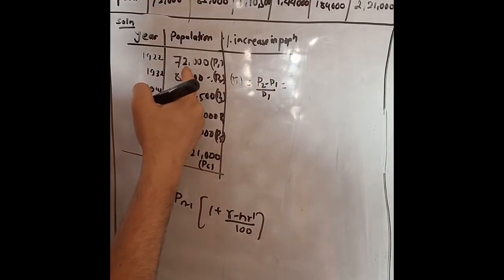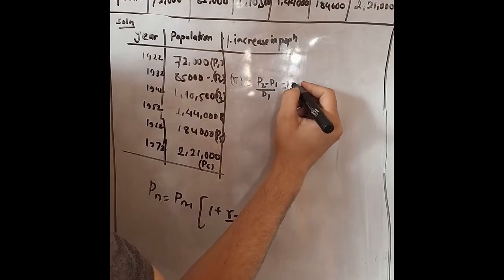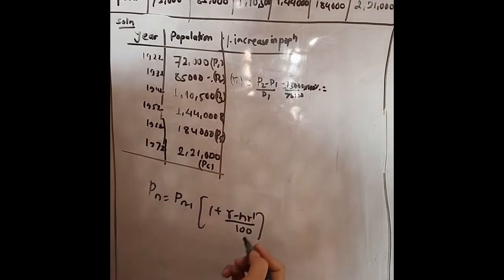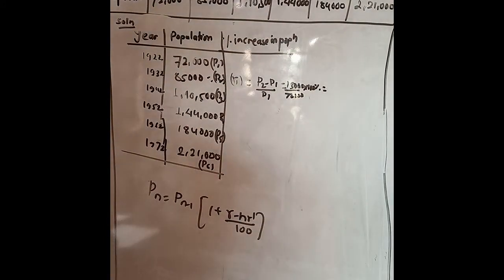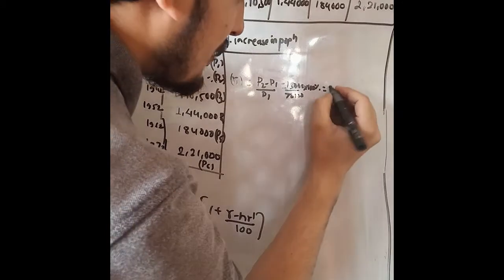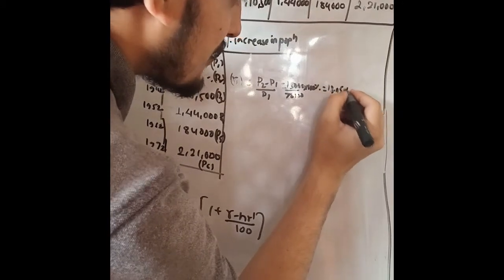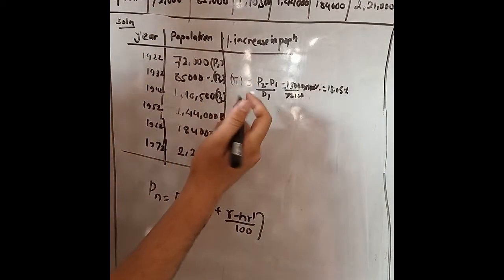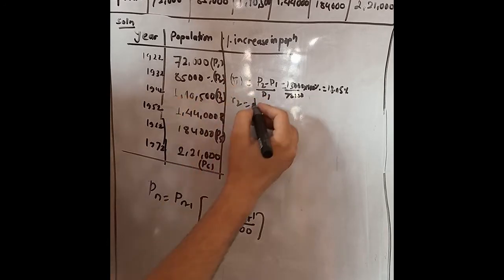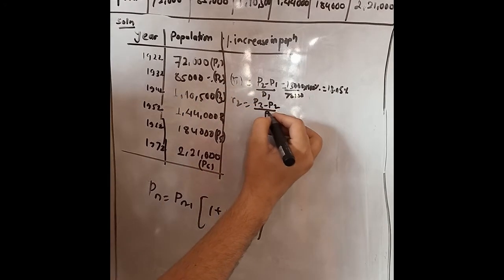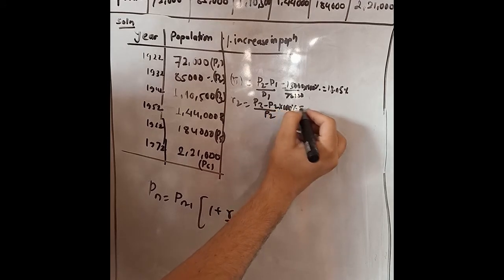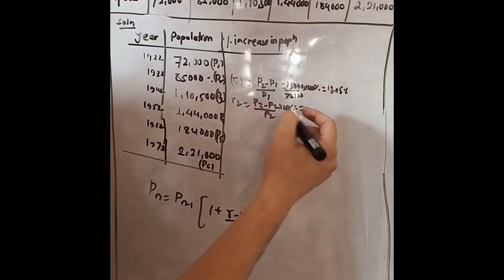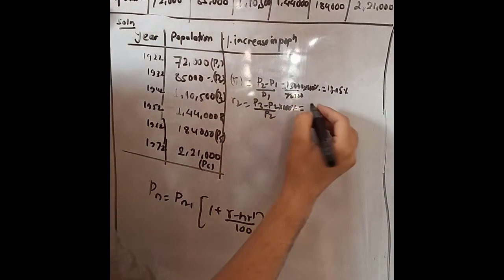R1 equals 13,000 divided by 72,000 into 100 percent, which gives 18.05 percent. So R1 is 18.05 percent. Likewise, we need to assess all the remaining portions of this column. R2 equals (P3 − P2) divided by P2 into 100 percent, and finally you will get 30 percent.